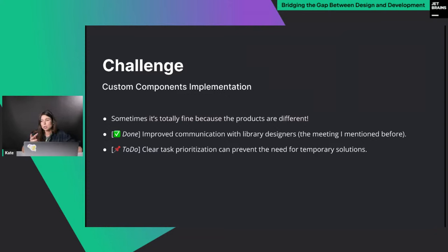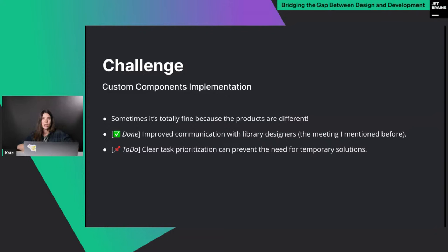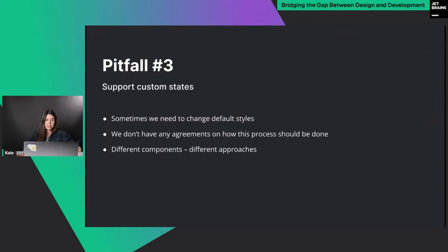What would be nice to have here is task prioritization, because it's hard to understand if we need a component right now or if the feature releases in a month, and how quickly we can develop it. Sometimes it's easier to make a temporary custom solution and then replace it with a library component. Either way, we need to discuss more, prioritize, and set deadlines. The next pitfall is about custom style support — sometimes we need to customize styles of library elements.